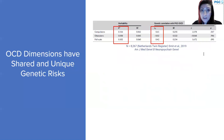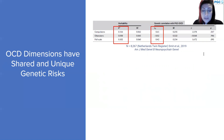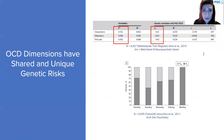OCD dimensions have both shared and unique genetic risks. A recent study in a large sample of twins looked at SNP heritability of compulsive symptoms versus obsessive symptoms. Compulsive symptoms had twice the SNP heritability of obsessive symptoms, and only compulsive symptoms were genetically correlated with diagnosed OCD in the PGC sample, whereas obsessive symptoms were not at all, suggesting differences in the genetic architecture of those two broad symptom types.